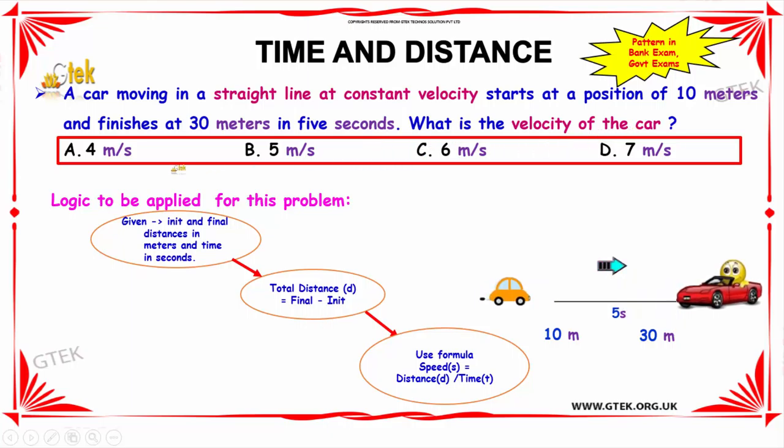The options given are, option A is 4 meter per second, option B is 5 meter per second, option C is 6 meter per second and option D is 7 meter per second.